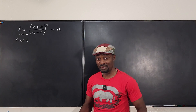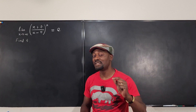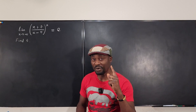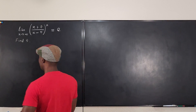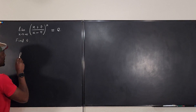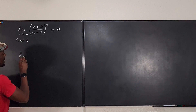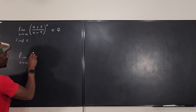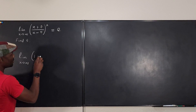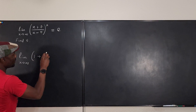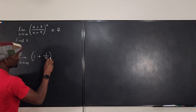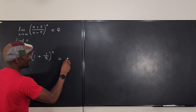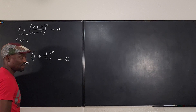The first thing I did was write the definition of e that I know. I know that if I take the limit as x goes to infinity of 1 plus 1 over x, raised to the power x, that limit is going to be e.